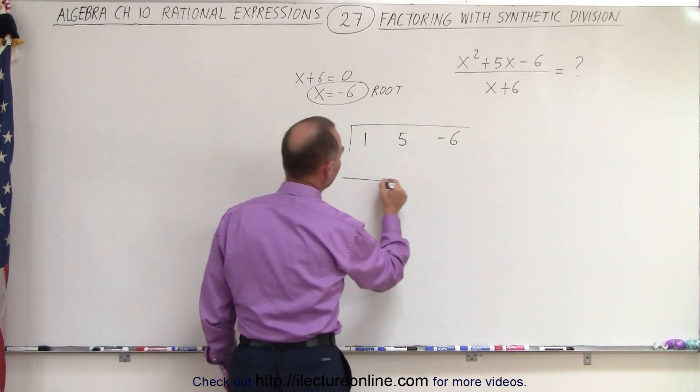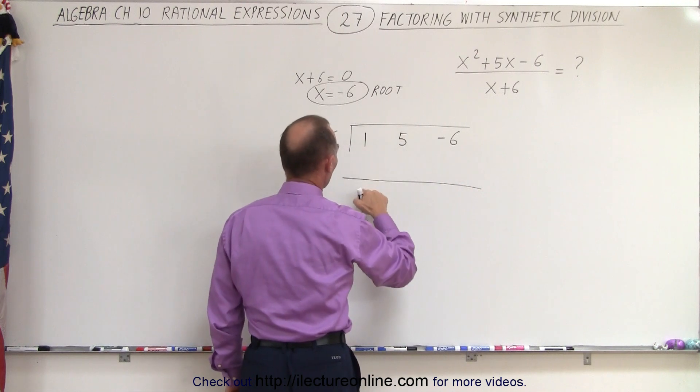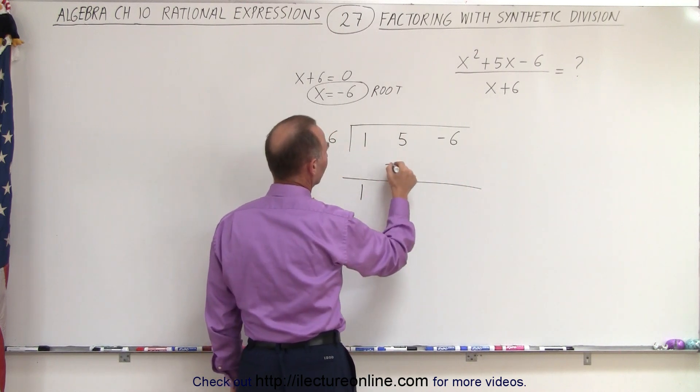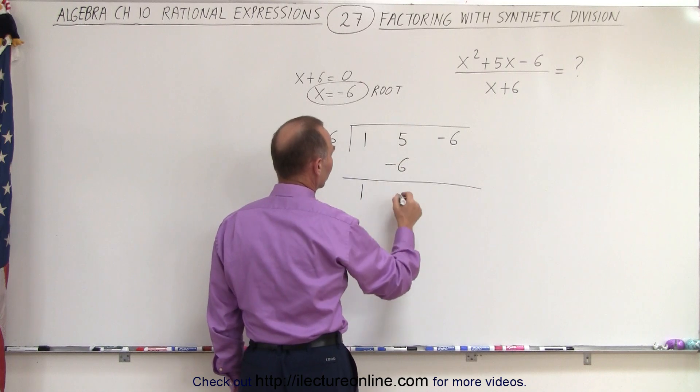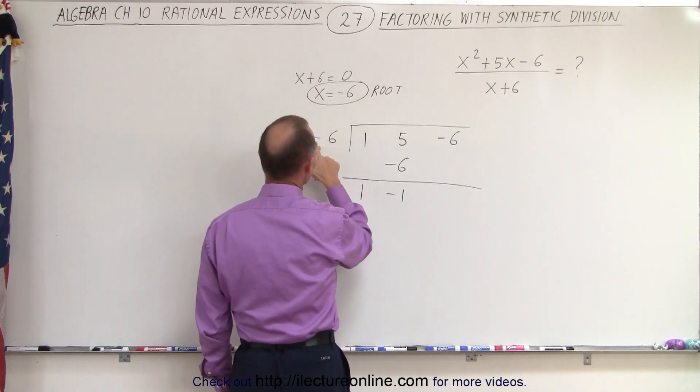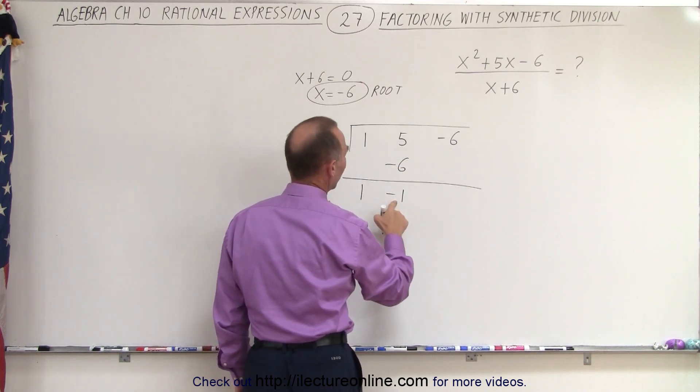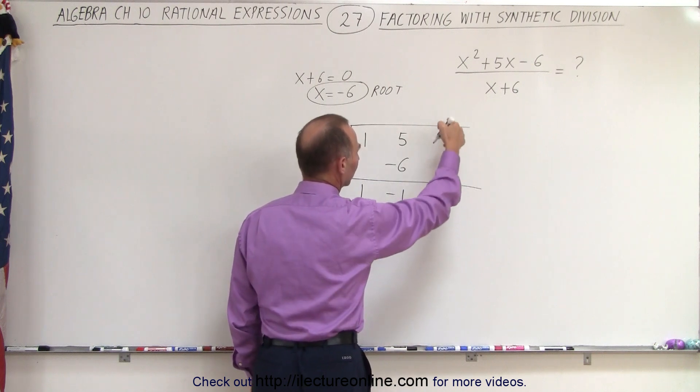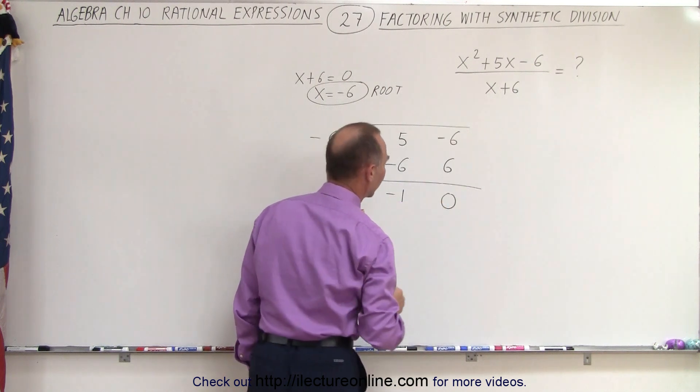We draw the line, we put down the number 1 over here, negative 6 times 1 is negative 6. We add the two numbers together, we get negative 1. Negative 6 times negative 1 is positive 6. We put that down here, add the two numbers and we get 0.